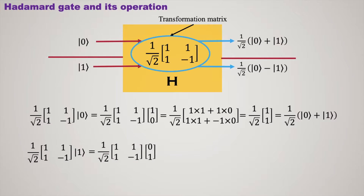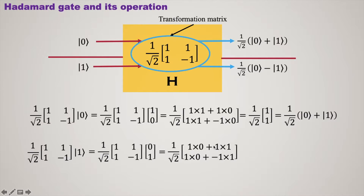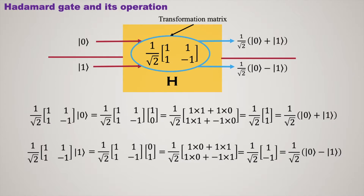Now see the operation for ket 1. This is the multiplication operation and here is the output: (ket 0 − ket 1) / √2. These are the two mathematical operations behind the Hadamard operation.